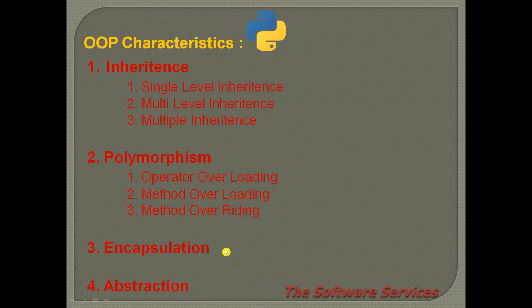Encapsulation means that inside a class, the attributes, variables, methods, and functions are protected from the outside world. Outside access is controlled — that protection is what encapsulation is called.